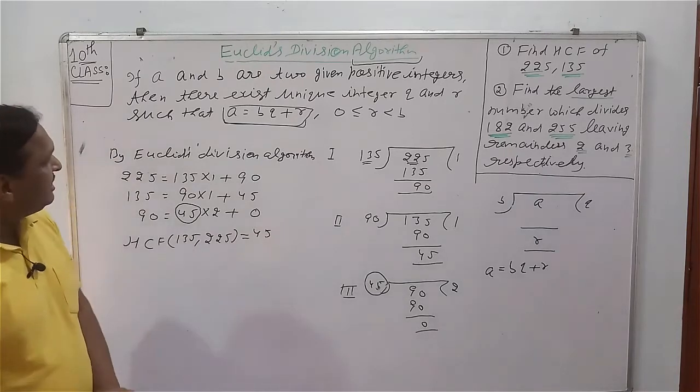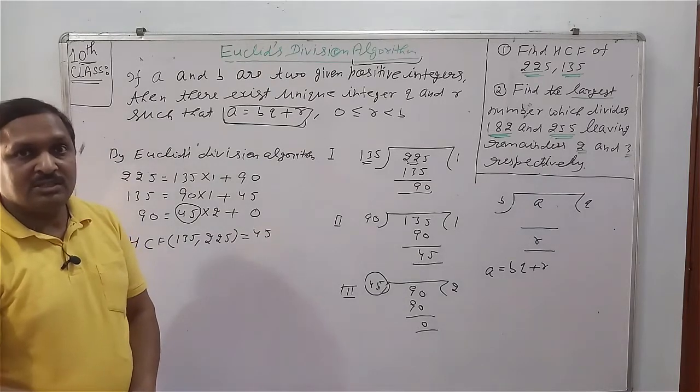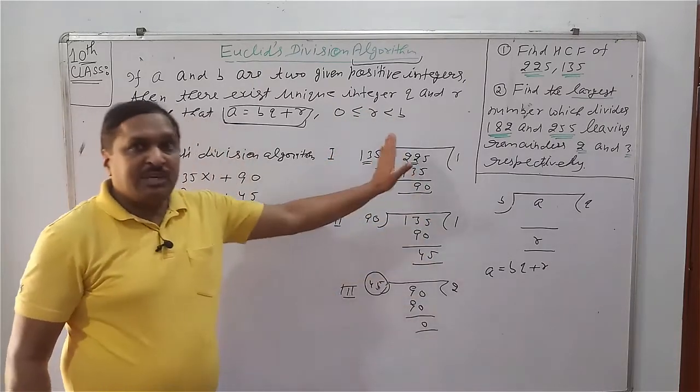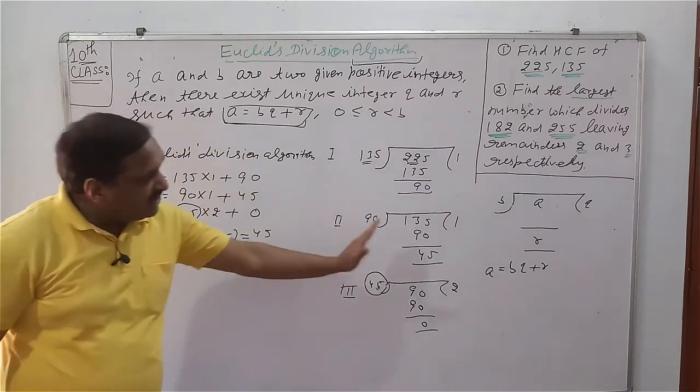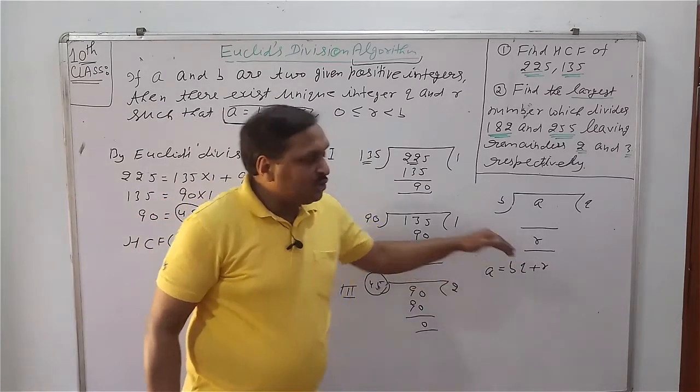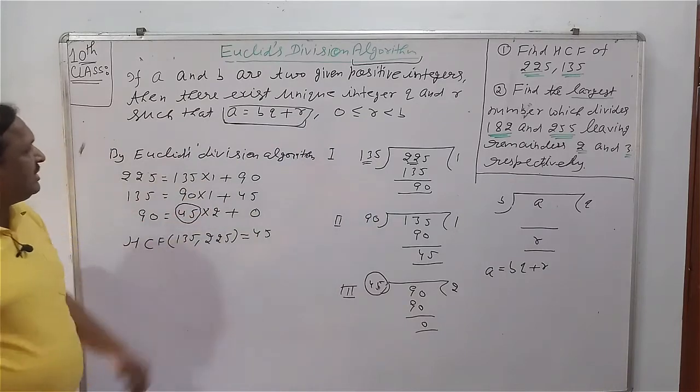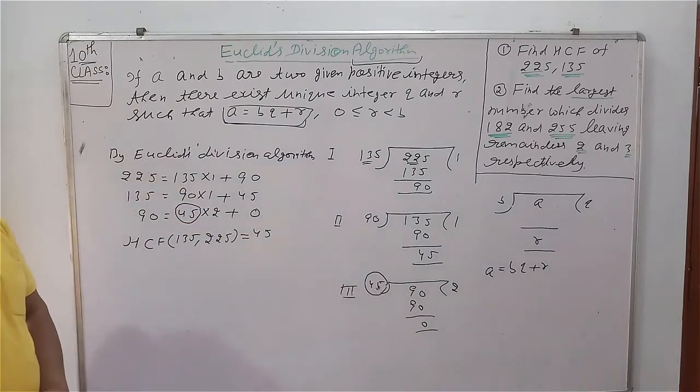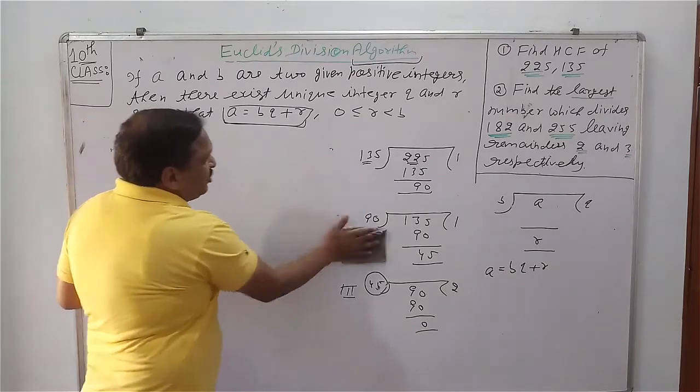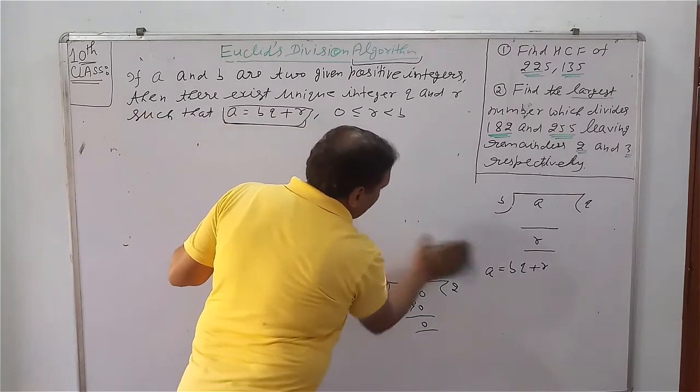So we can say HCF of 135 and 225 is equal to 45. Dear students, it is easy. This procedure you have done in all previous classes. Just you have to write using division algorithm, that is Euclid's division algorithm. We can take another example.